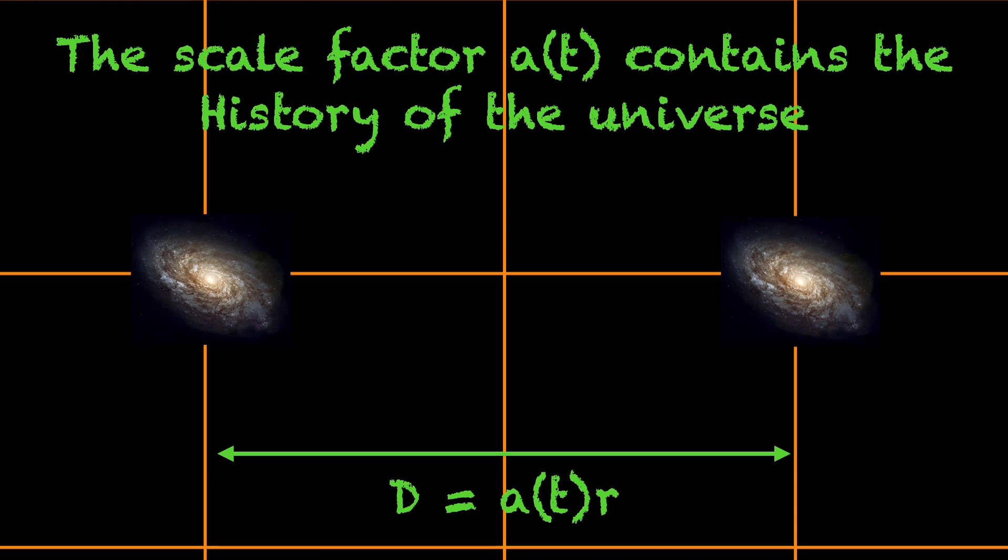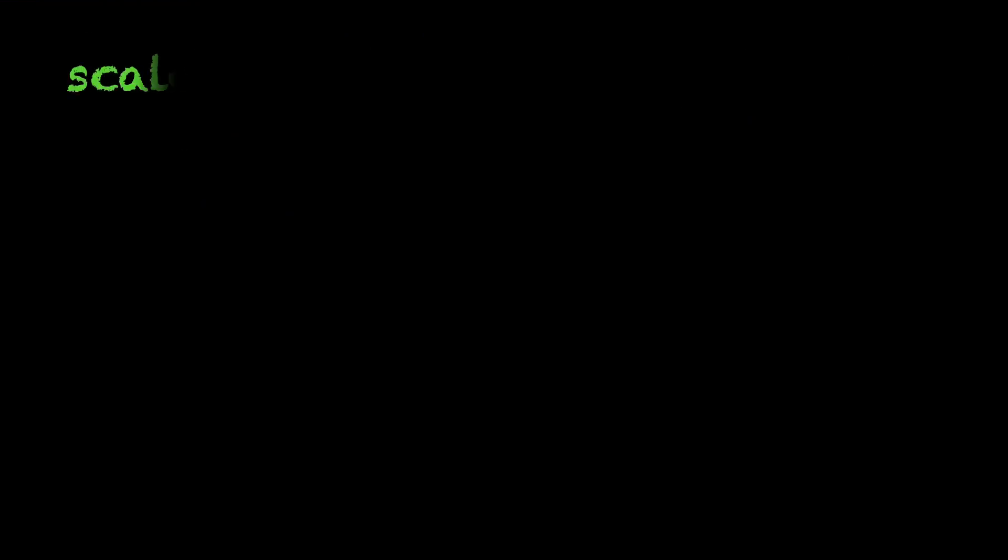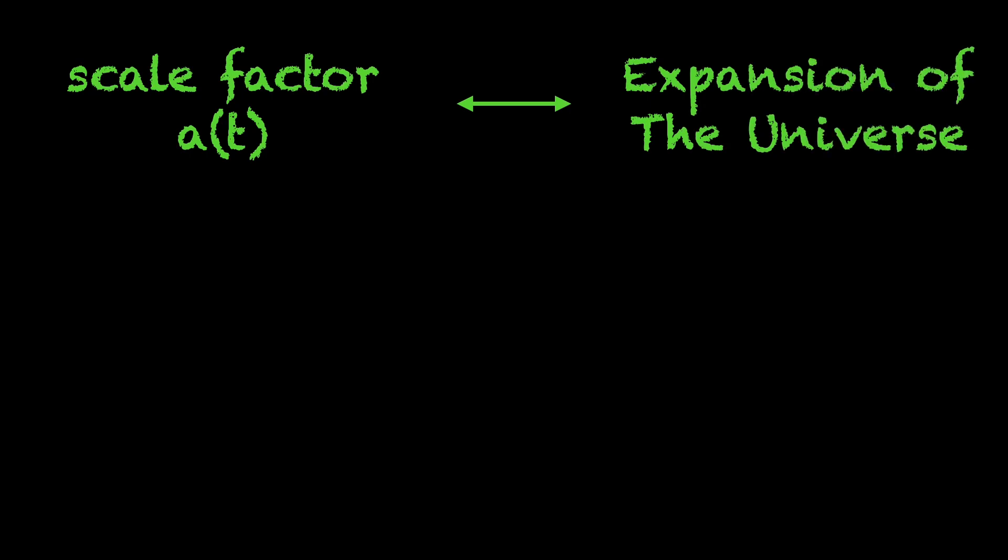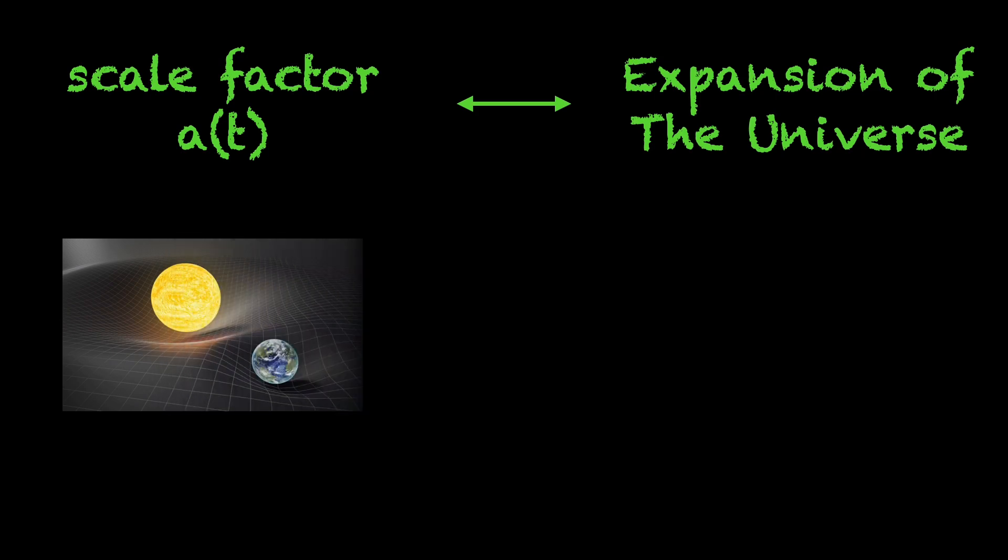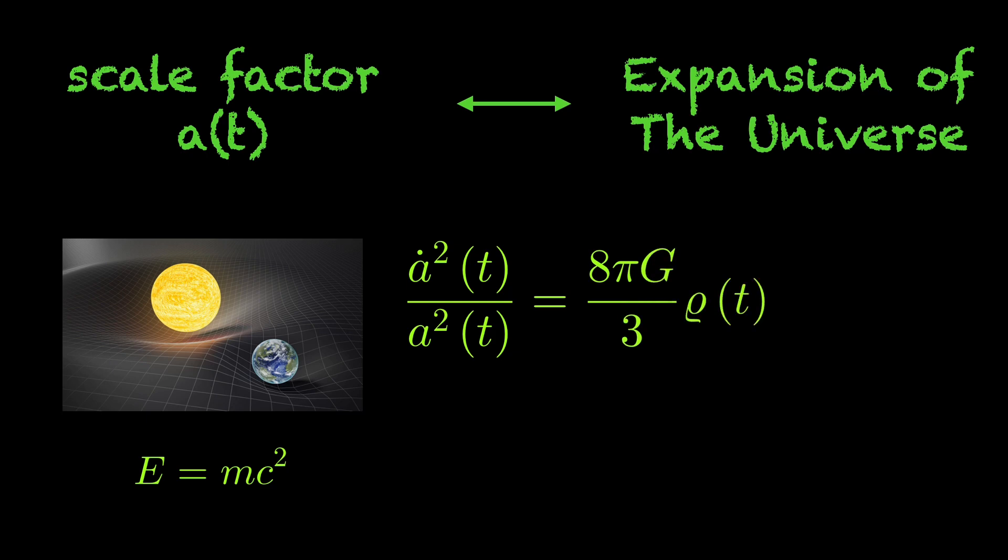But how can we actually know? So let us think for a moment about what could possibly influence that scale factor. The scale factor represents the expansion of space. Space leads us into the realm of general relativity, where we learned that mass and energy are curving spacetime. And since E equals mc squared, it is energy that influences spacetime. So the scale factor must somehow be influenced by the energy that the universe contains. And that is exactly what the Friedman equation is telling us.